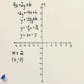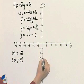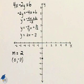I can plot the line now because I know a point, (0, -3), is the y-intercept.